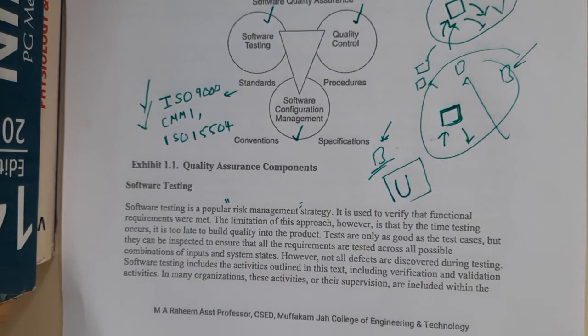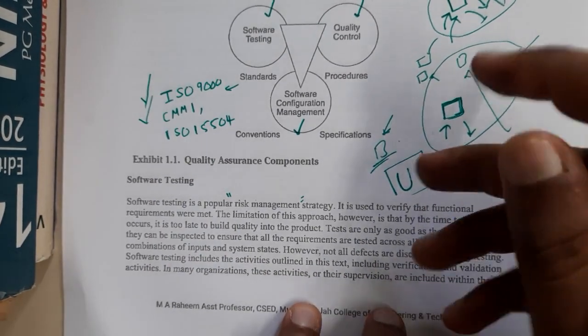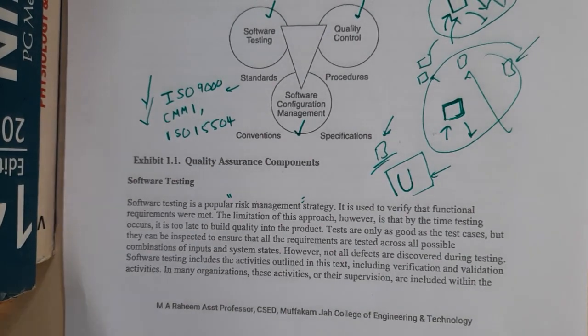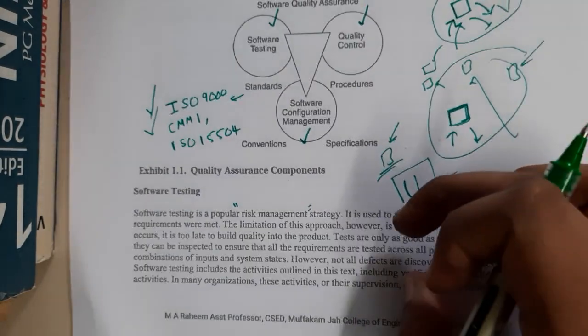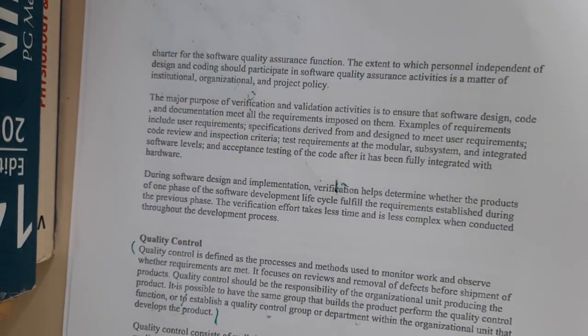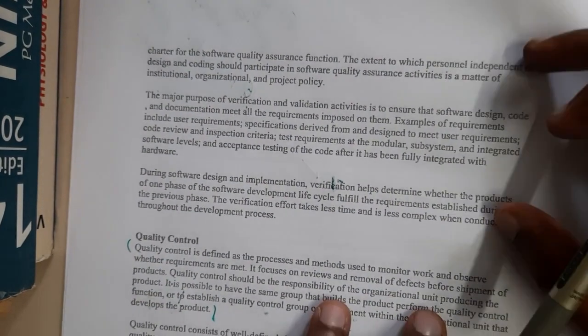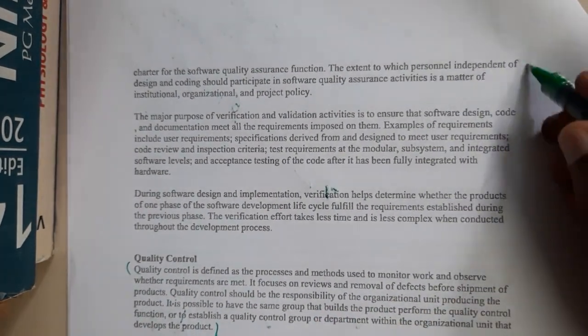That is why updates are always done — even big applications like Windows and Mac have updates because of bug fixes. Our games, Android apps, PC software — everything does the same thing. This is the introduction to software testing; please go through the theory part as it is well written with clear examples.